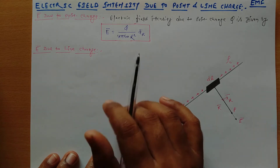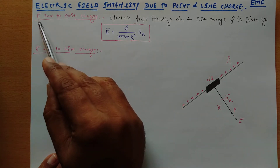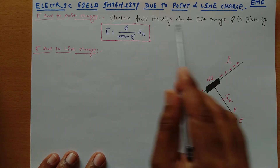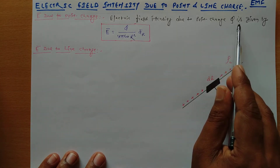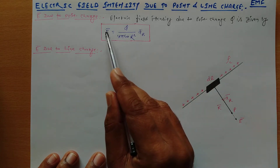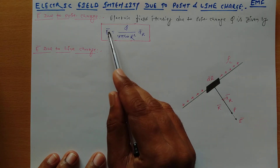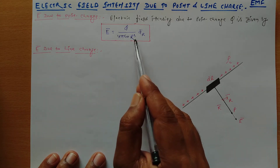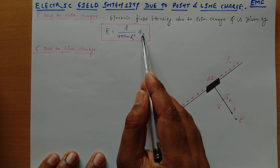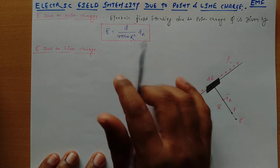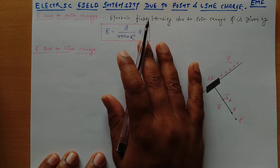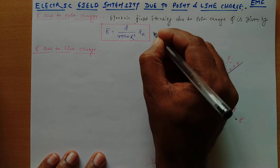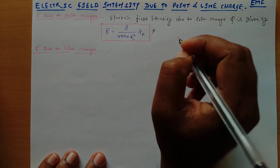First we will look at the electric field intensity due to the point charge. The electric field intensity due to point charge Q is given by E equal to Q upon 4 pi epsilon r square, multiplied by the unit vector ar. This is the expression of electric field intensity for a particular point charge. It is very simple and important for numerical aspects.